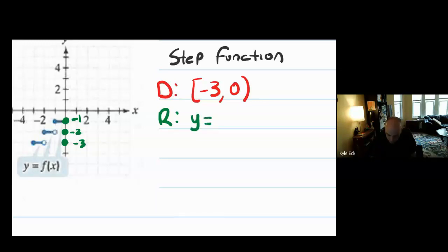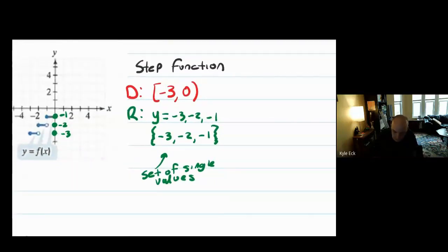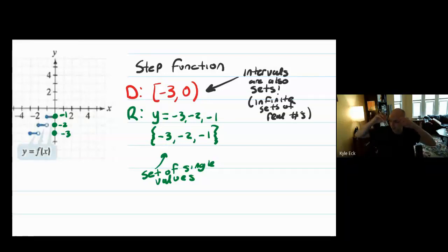The range is far more interesting for the step function. The graph only really exists on the values negative three, negative two, negative one — only on those Y values. So for the range, an interval is not appropriate at all. I could write the range as Y equals negative three, negative two, negative one. Or I could write it as a set: set bracket negative three, negative two, negative one. This is a set of single values. An interval is also a set — an infinite set or continuous line of real numbers — but they're still sets.